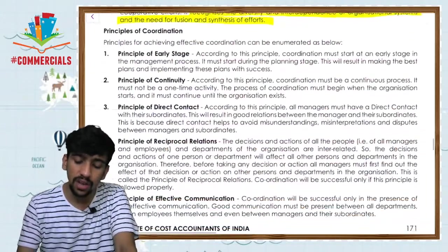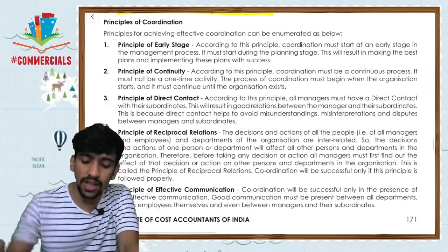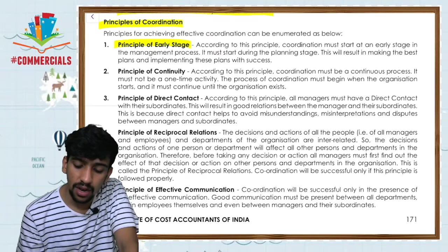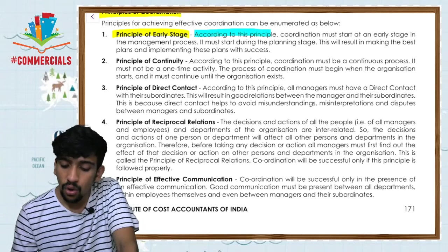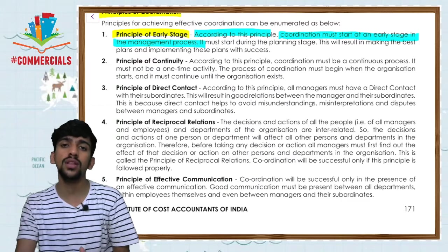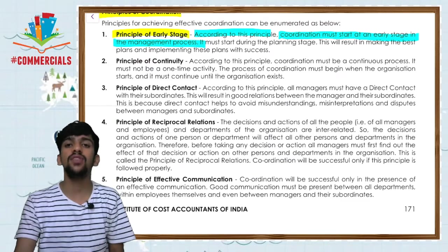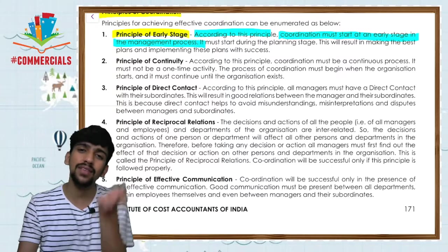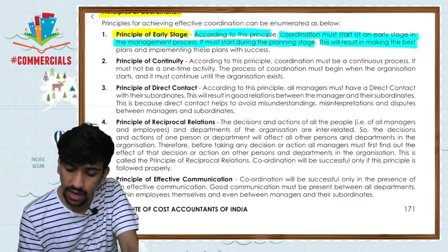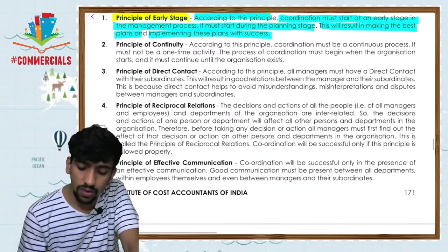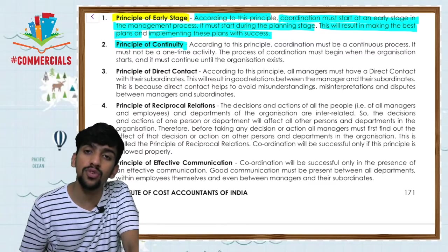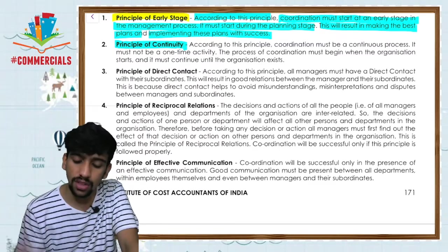Those are the features of coordination. Now moving to the principles of coordination. The first principle is the principle of early stage — according to this principle, coordination must start at an early stage in the management process. As soon as management process begins — from the planning stage — coordination must begin. Planning must be done keeping coordination in mind, and this results in making the best plans and implementing them successfully.